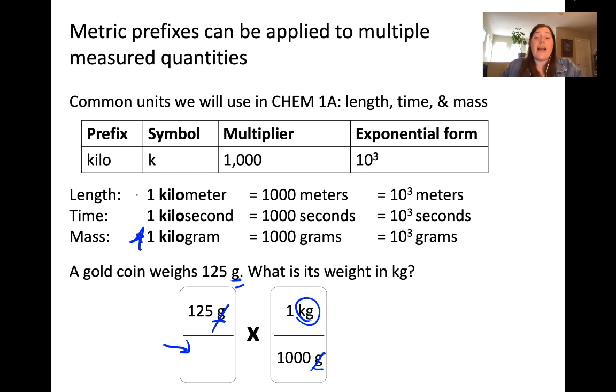When typing this into your calculator, you'll divide 125 by 1,000. This gives an answer of 0.125 kilograms.